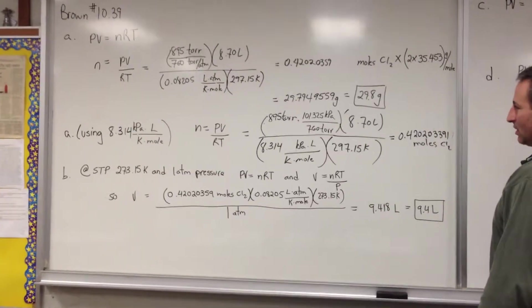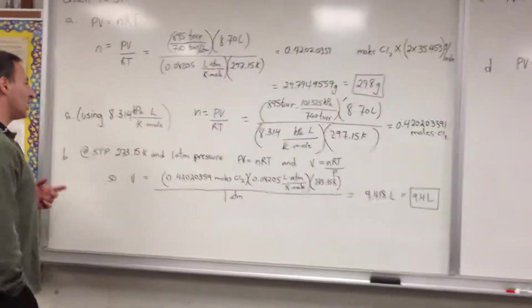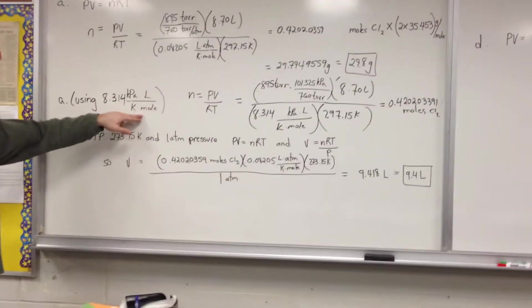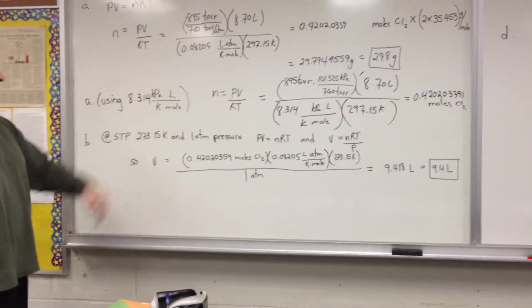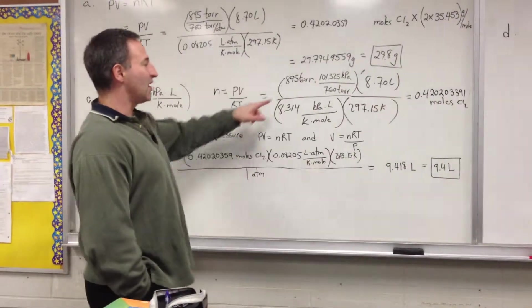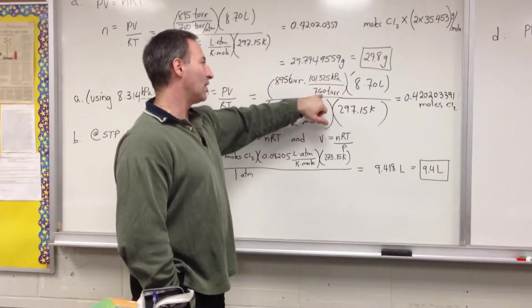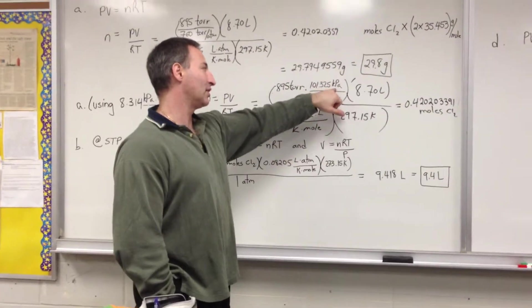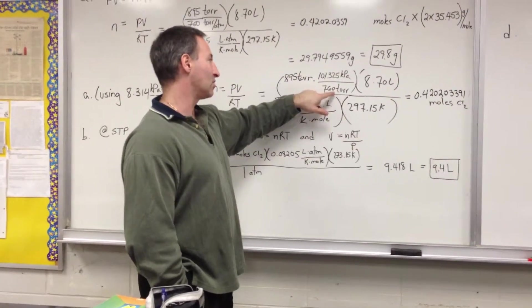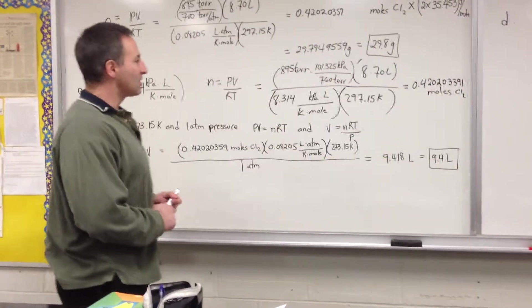We can solve the same problem using a different value of R. 8.314 kilopascal liters per Kelvin mole is the other popular quantity used for R. But this time, we have to turn torr into kilopascals. So the conversion factor is 101.325 kilopascals, which is equal to 1 atmosphere, is also equal to 760 torr. So that's how that conversion takes place.